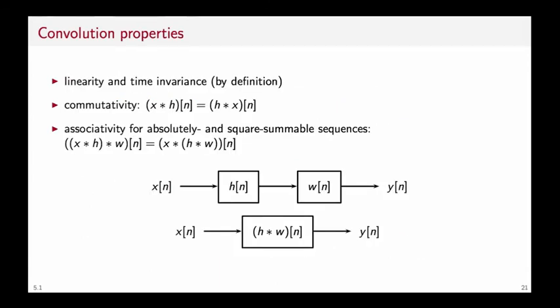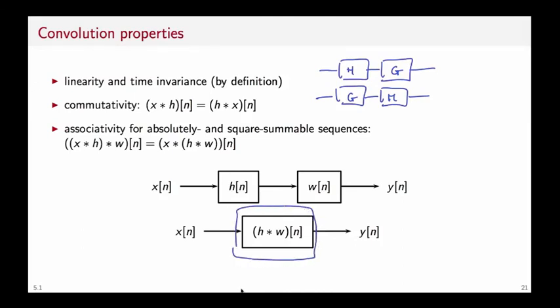Finally, a few words on the convolution. The convolution is, of course, linear and time-invariant because it describes a linear and time-invariant operation. It is also commutative, which means that if you have two filters in cascade, you can safely invert their sequence and the result will not change. For absolutely and square summable sequences, the convolution is also associative, which means that if you have a cascaded system, you can lump their effect into a single filter whose impulse response is the convolution of the individual impulse responses.